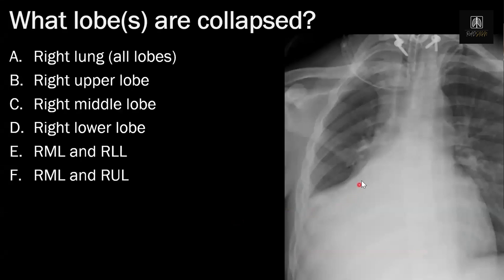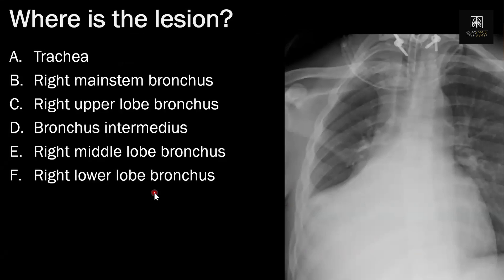In this example, both the right heart border and the diaphragm are obscured, so which lobes are collapsed? Both the middle lobe and the lower lobe are collapsed because we lose both the right heart border and the right hemidiaphragm. If this patient had a tumor in one of their bronchi, the lesion has to be in the bronchus intermedius, because the bronchus intermedius supplies air to both the right middle lobe and the right lower lobe — which is exactly what happened in this case.